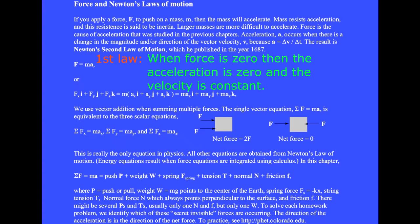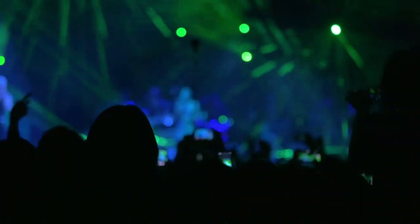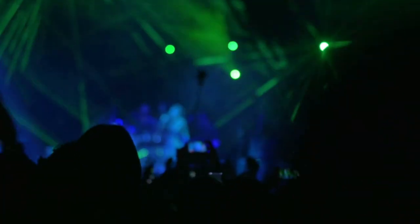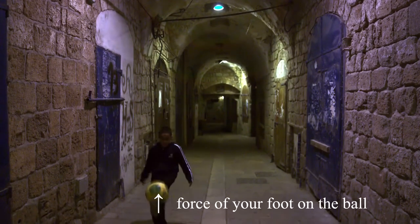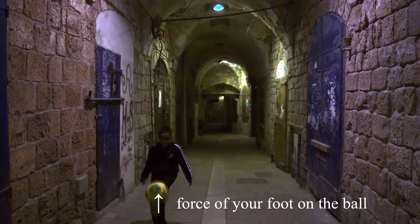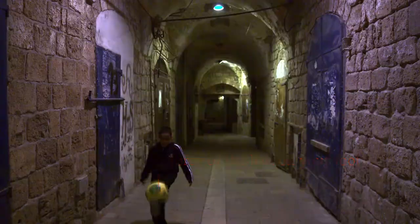Notice also that when force F equals zero, then the acceleration is zero. This means that the mass moves with constant velocity when no force acts on it. This is Galileo's inertia. Notice also that you cannot push on nothing. You have to push on something and it pushes back. When you kick the football, it kicks you back with an equal force that occurs in the opposite direction. The harder you kick the football, the harder it kicks you back. Forces occur in equal and opposite action-reaction pairs.